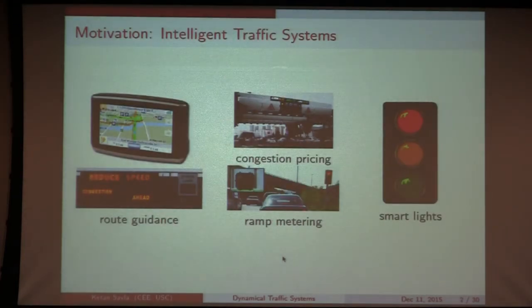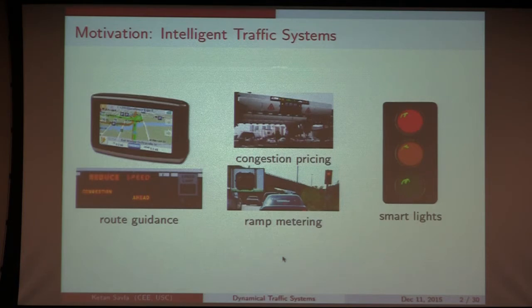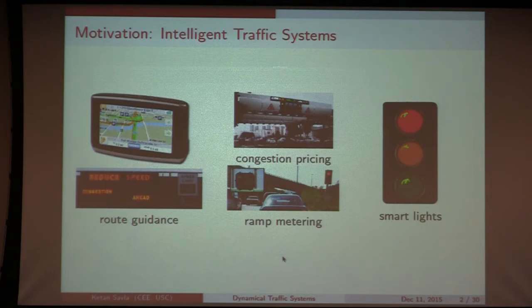The primary motivation comes from intelligent traffic systems, where the emergence of communication and actuation mechanisms is allowing traffic engineers to do real-time control. Examples include real-time navigation devices, congestion pricing in Singapore and Los Angeles with feedback-based pricing, smart green lights that account for real-time queue lengths at intersections, and similarly ramp metering and route guidance.